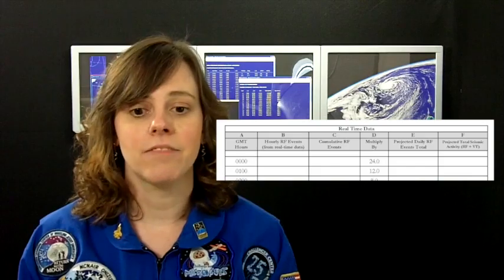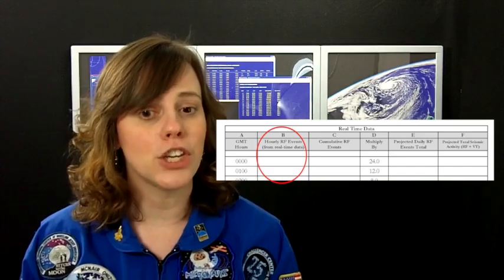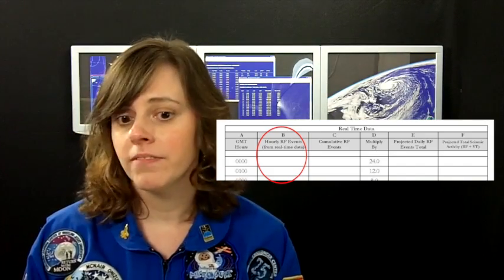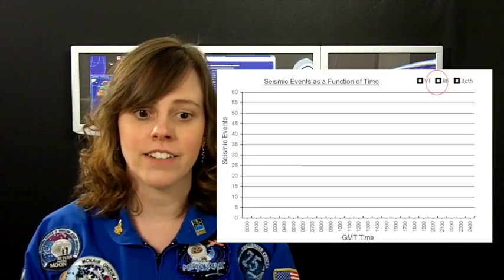You will complete the data in the same manner as the VT data. Copy the hourly RF event, use the same number for the cumulative for the first reading, and use the hourly RF multiplier, and then graph the RF event.